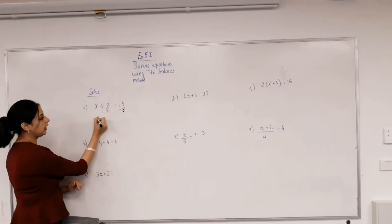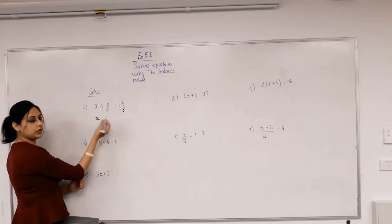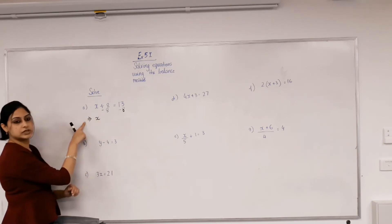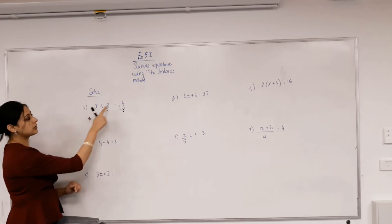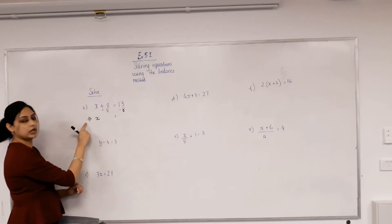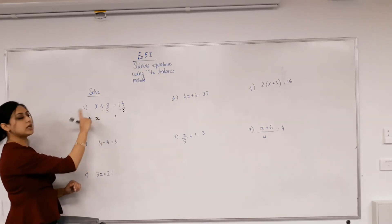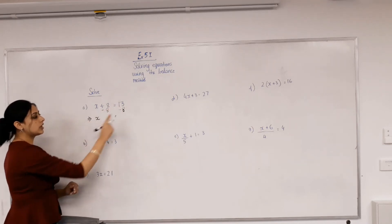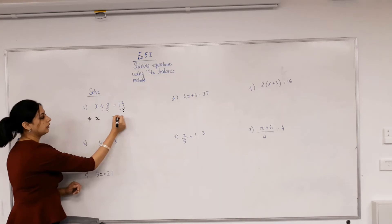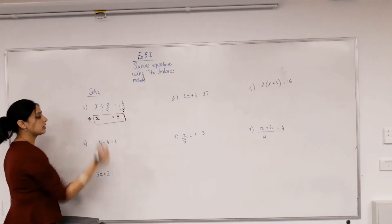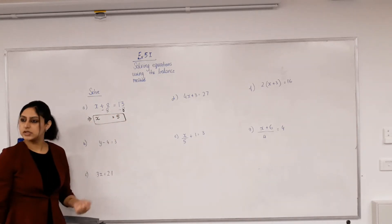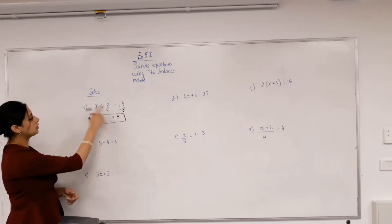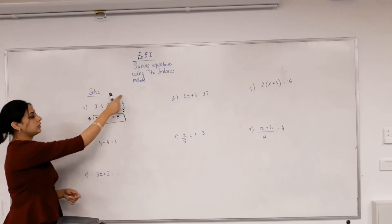8 take away 8 becomes 0. Whenever we solve an equation I want you to use the implies sign, because this already has an equal sign - you can't just use another equal sign. This step implies x equals 13 take away 8, which is 5. We can quickly check: 5 plus 8 gives us 13. Perfect.